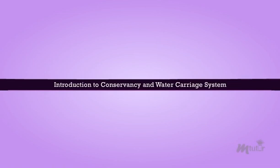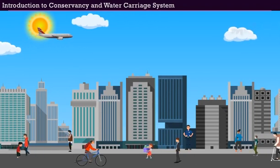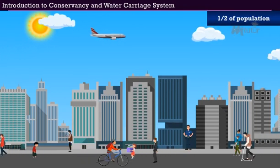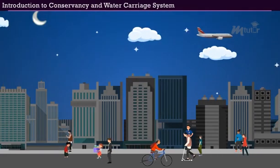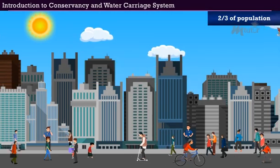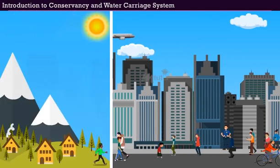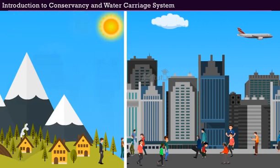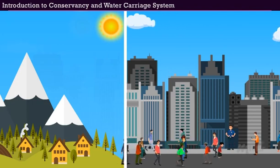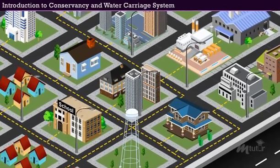Introduction to Conservancy and Water Carriage System. Cities are one of mankind's greatest developments. Half the people on the planet now live in urban areas, and it is expected to grow to two-thirds by the year 2050. People are driven to the higher living standards and social amenities that cities provide, but this results in the need for a better and well-planned habitation system to accommodate the overpopulation.